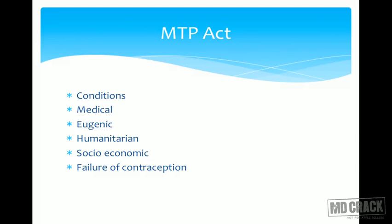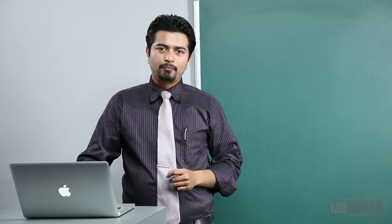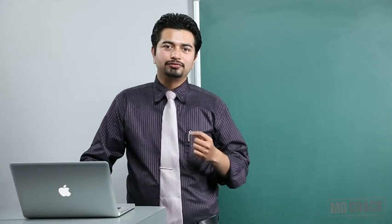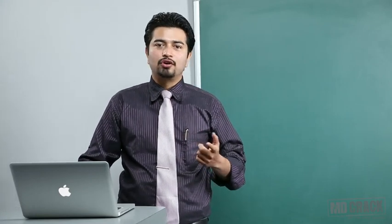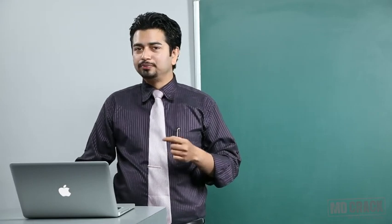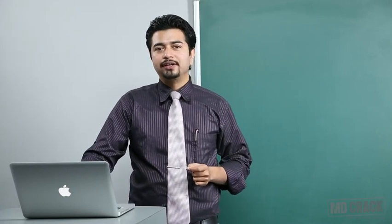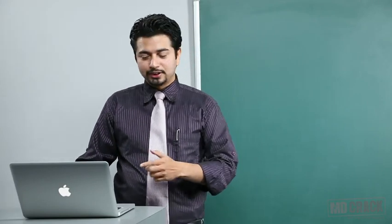Lastly, and most uniquely in the Indian MTP Act, is the failure of contraception. I use the word 'unique' because it is a novel indication. Failure of contraception is very difficult to prove — any couple can say the condom slipped off. But safe abortion is a definitive right of the female, and thus this clause exists. Among all the clauses, failure of contraception is the most lax.